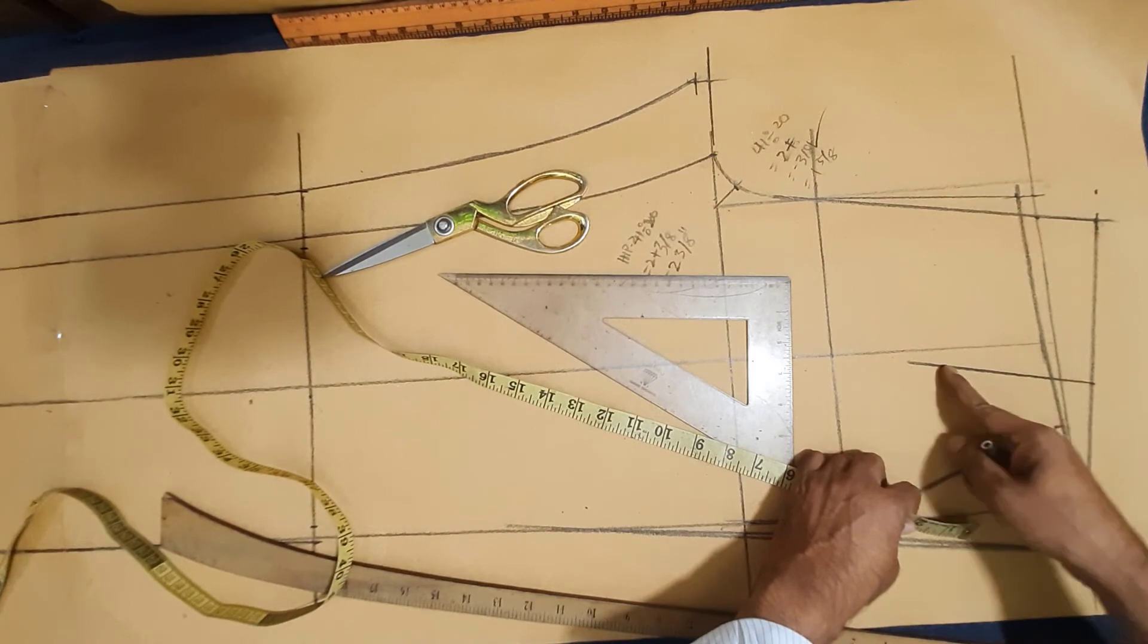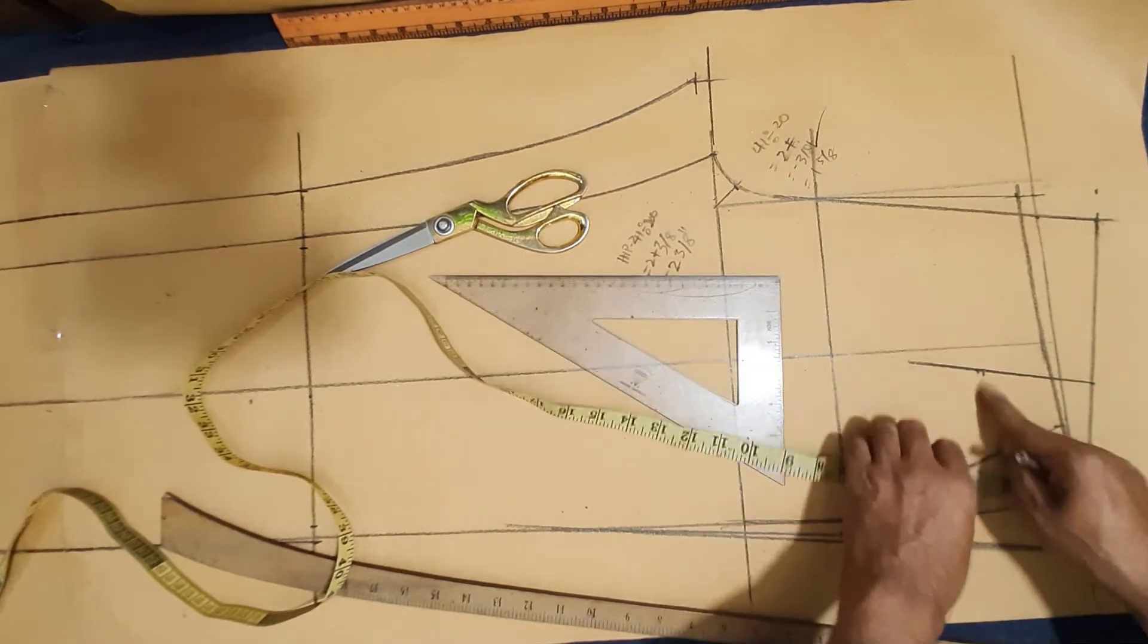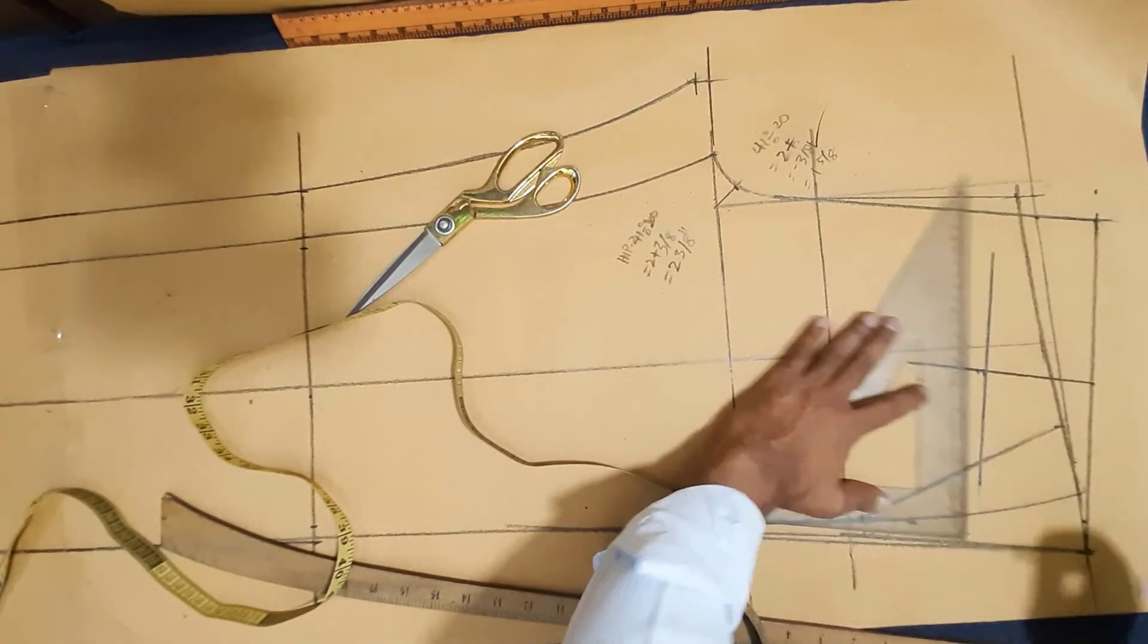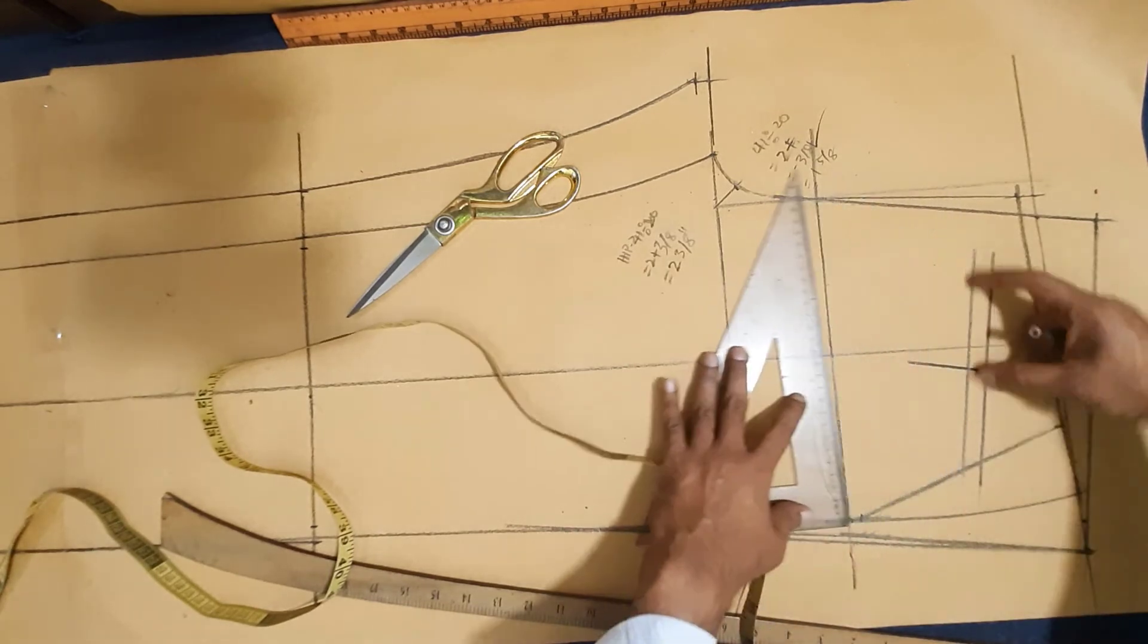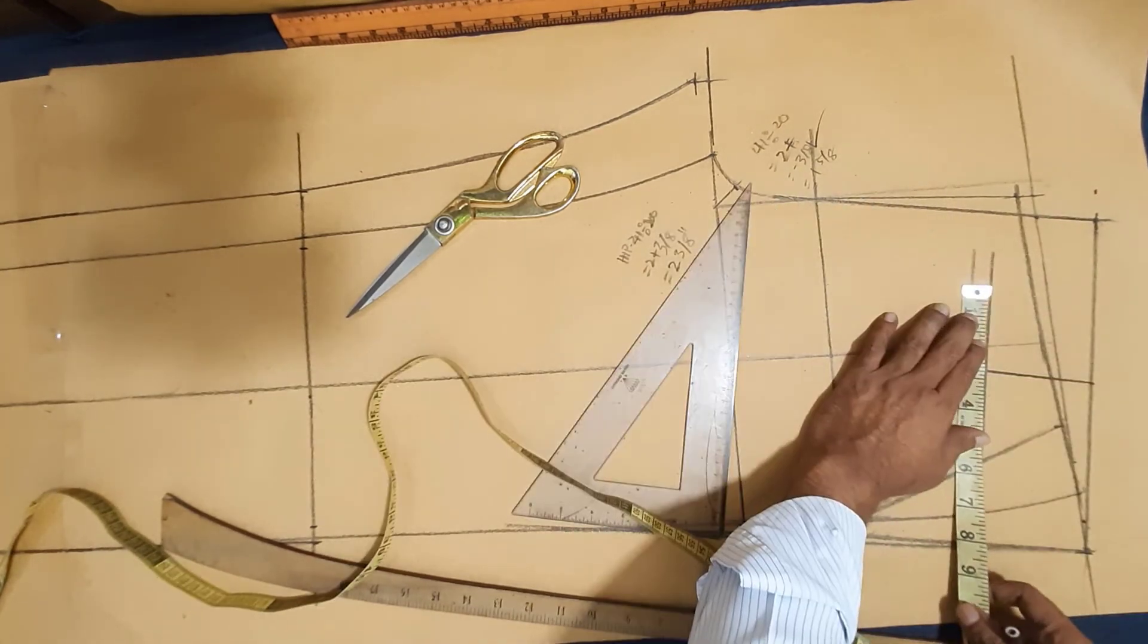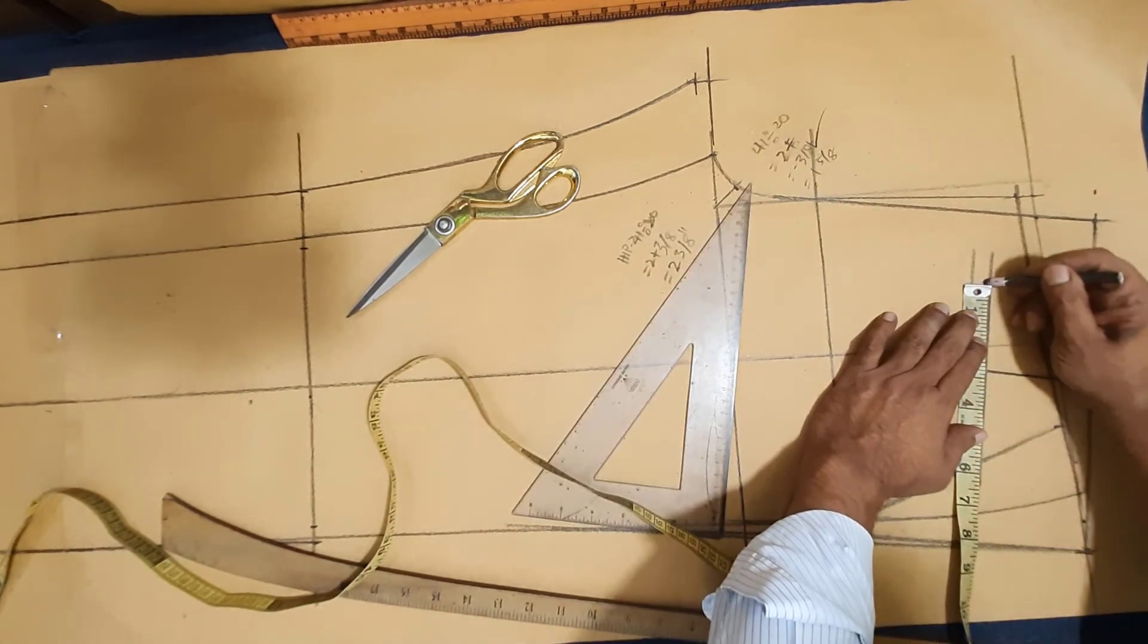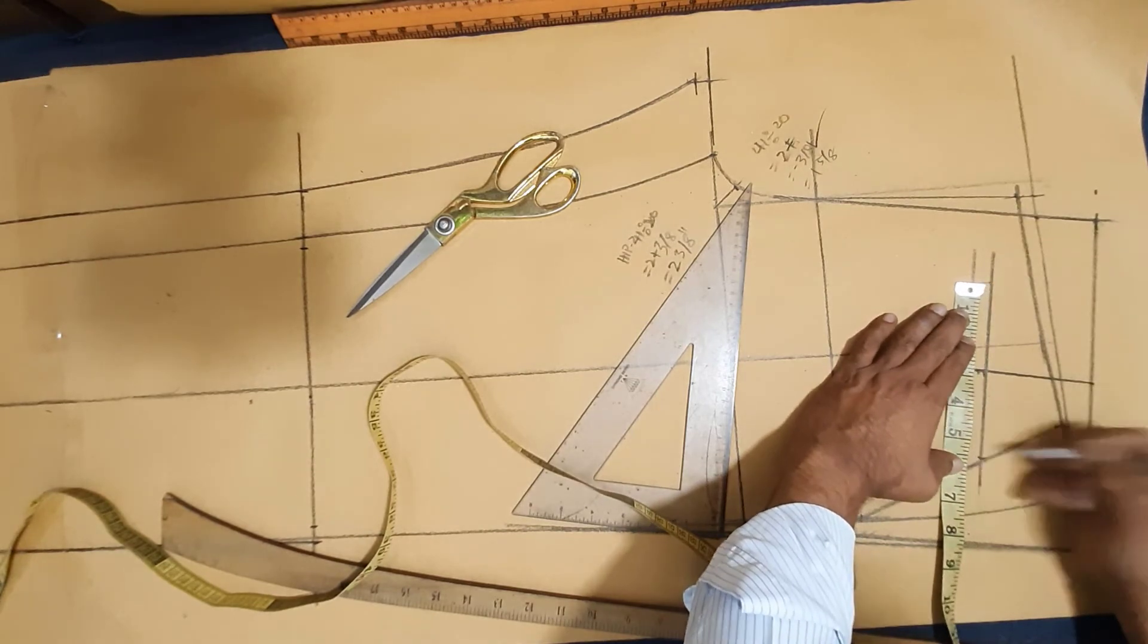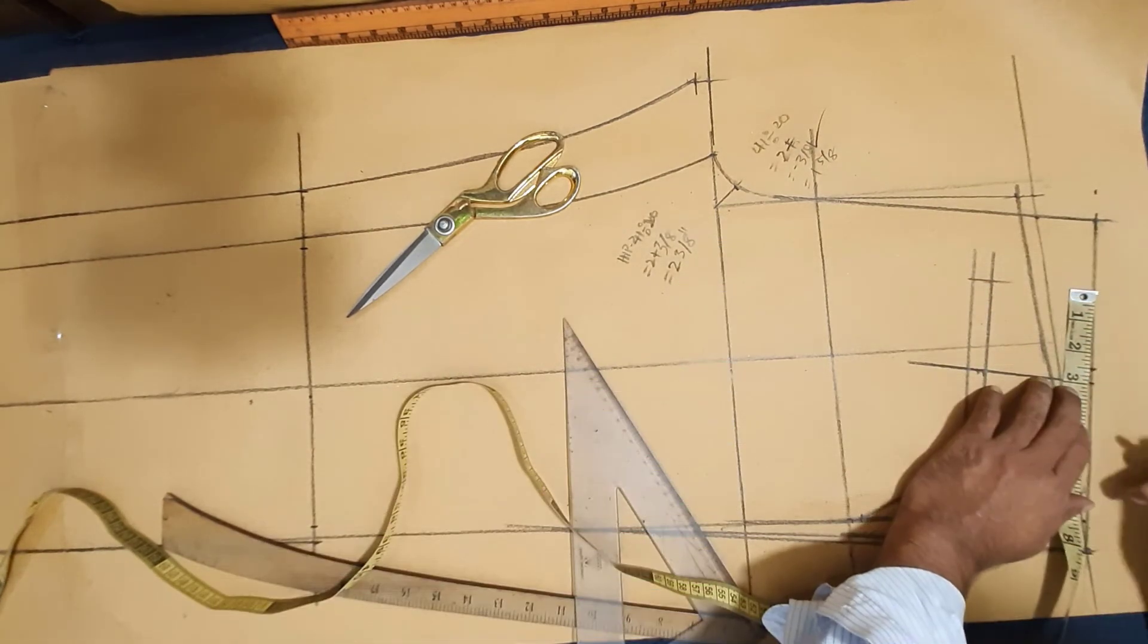Dart length make back pocket opening line, half inch back pocket well height five and half inch, back pocket opening five and half inch.